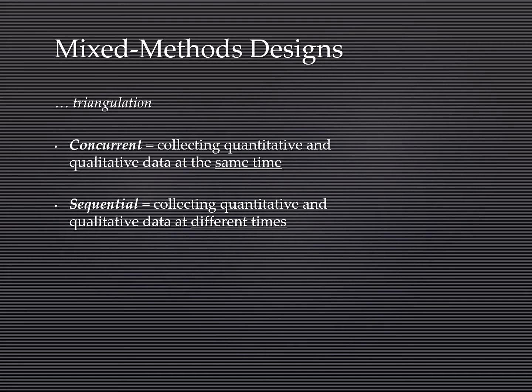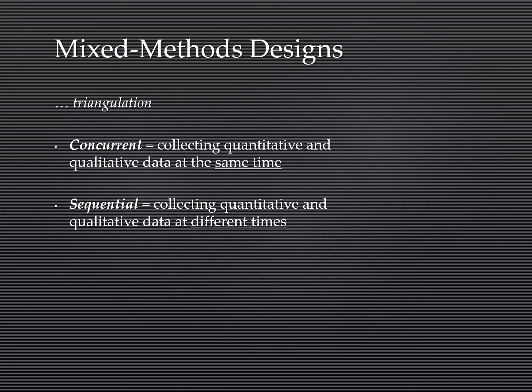Within triangulation there's a specific approach called mixed methods design. There are two types: concurrent and sequential. Concurrent mixed methods is when we collect quantitative and qualitative data at the same time, providing rich and robust information — the breadth of collecting a lot of data and the depth which is the richness. Sequential mixed methods involves collecting quantitative and qualitative data at different times. We get a general idea — the breadth, usually quantitative — and then the depth and richness, usually qualitative. Which comes first depends on the research subject or methodology.